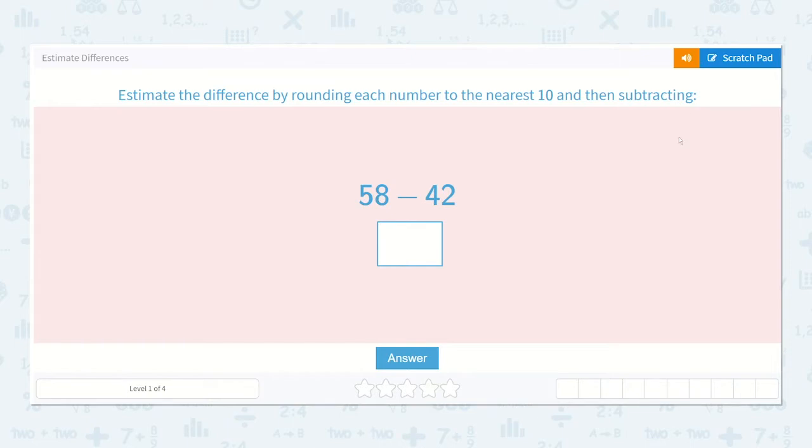estimate the difference by rounding each number to the nearest 10 and then subtracting. 58 minus 42. So let's estimate. If we have 58, we can round that to the nearest 10 and the nearest 10 would be 60. 42 rounded to the nearest 10 would be 40.